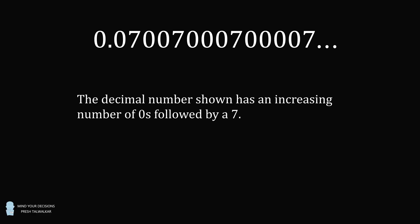The decimal number shown has an increasing number of zeros followed by a seven. First there's one zero and then a seven. Then there's two zeros and then a seven. Then there's three zeros and then a seven. Then there are four zeros and then a seven, and so on.